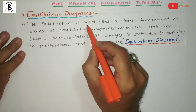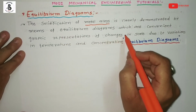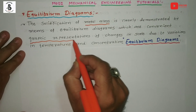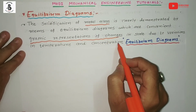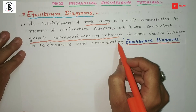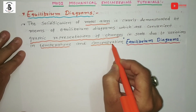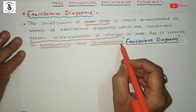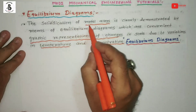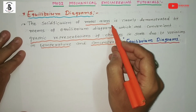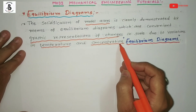The solidification of metal alloys is clearly demonstrated by means of equilibrium diagrams, which are a convenient graphical representation of changes in state due to variations in temperature and concentration. The equilibrium diagram deals with only two variables: temperature and concentration, or weight percentage of compositions, because all phase change procedures occur at constant pressure — one atmospheric pressure.